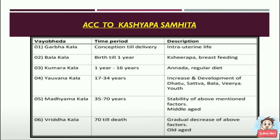During Yuvana Kala there is increase and development of Dhatu, Sattva, Bala, and Virya — meaning youth. The age from 35 to 70 is called Madhyamakala, during which stability of the above-mentioned factors is maintained — the middle-aged period. From age 70 till death it is called Vridhakala, during which gradual decrease of the above factors takes place — the old-aged period.